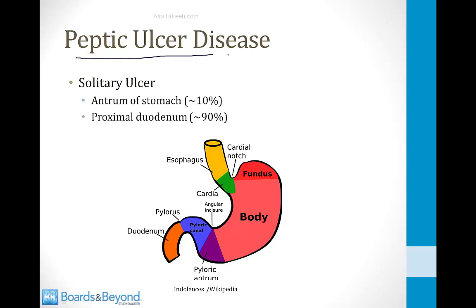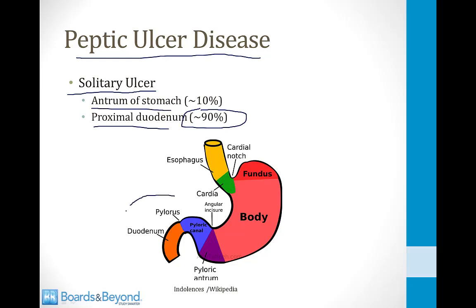Now let's talk about peptic ulcer disease. An ulcer is a portion of the stomach or intestine where the mucosal layer has been lost. Patients typically develop a solitary ulcer, most commonly in the proximal duodenum — 90% of ulcers occur in the duodenum. A smaller number, about 10%, occur in the antrum of the stomach. Ulcers are very rare in the body or fundus of the stomach.